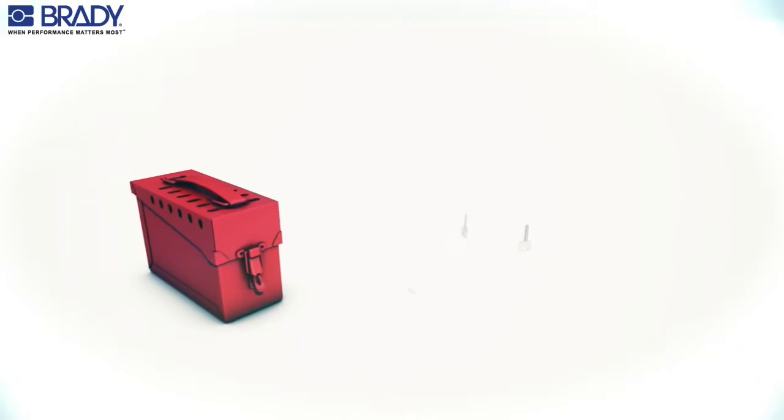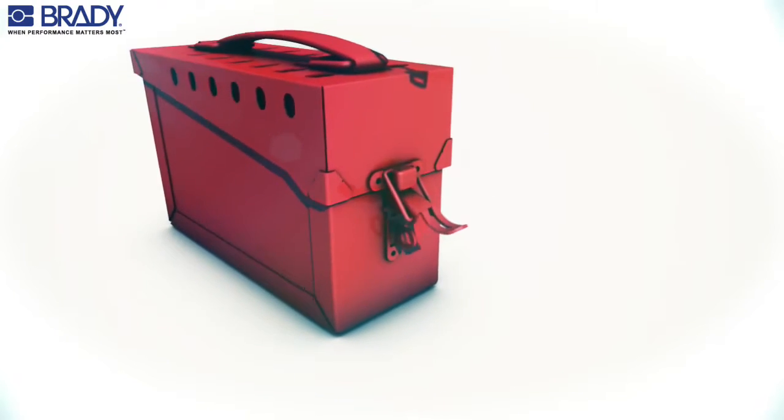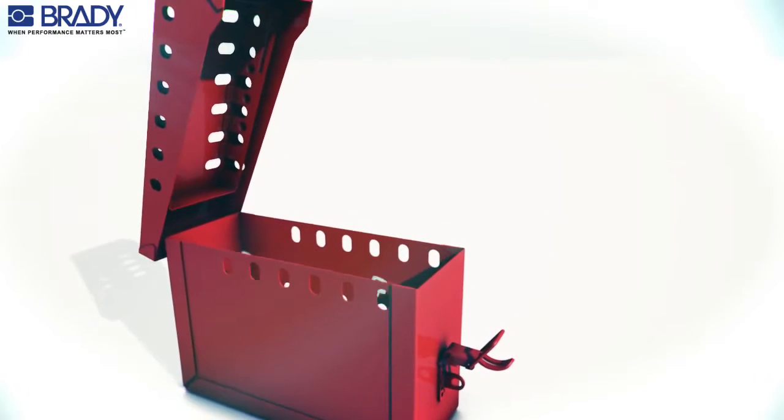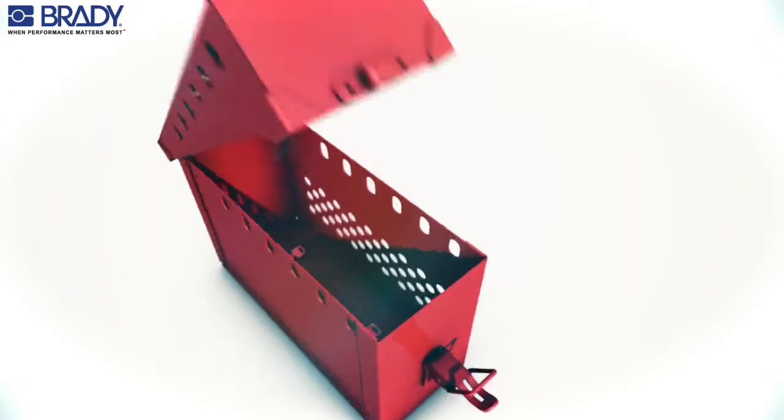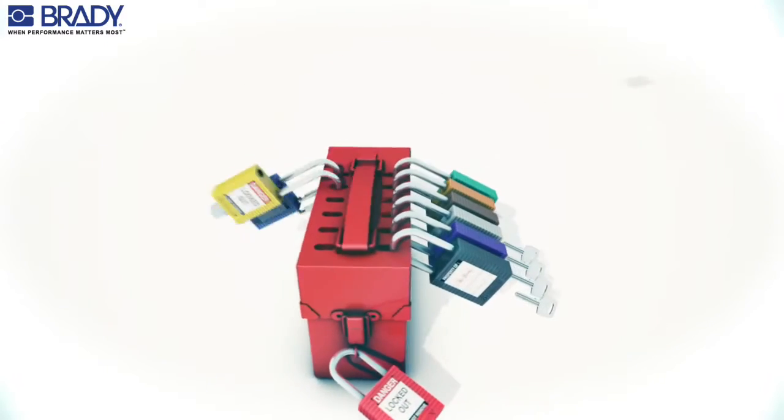Typically, the overseeing supervisor will secure a unique safety lock to each energy isolation point needing to be locked out, then places the operating keys into the lockbox. Each authorized worker then secures their personal safety lock to the lockbox.